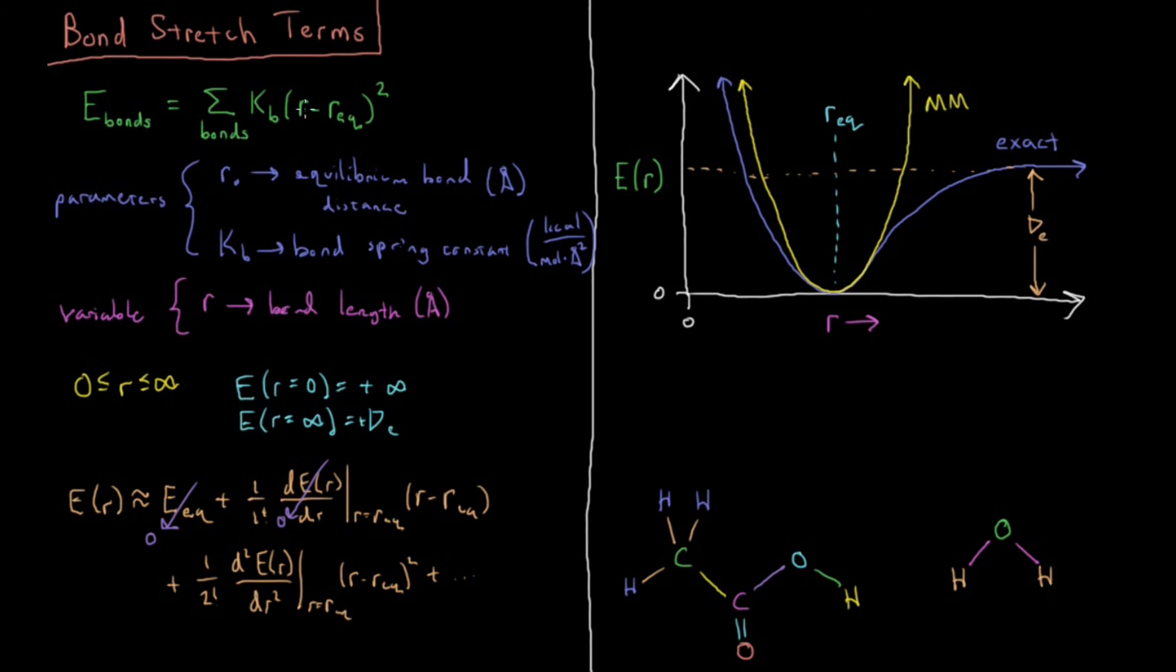So for our particular bond, we already have this R minus R_EQ squared, so that implies in this case that our K_B, as we call it, our force constant for the bond is equal to one half of the second derivative of the energy with respect to the bond length evaluated at the equilibrium bond length. So it is the springiness of our curve at our minimum here in our second order Taylor series.